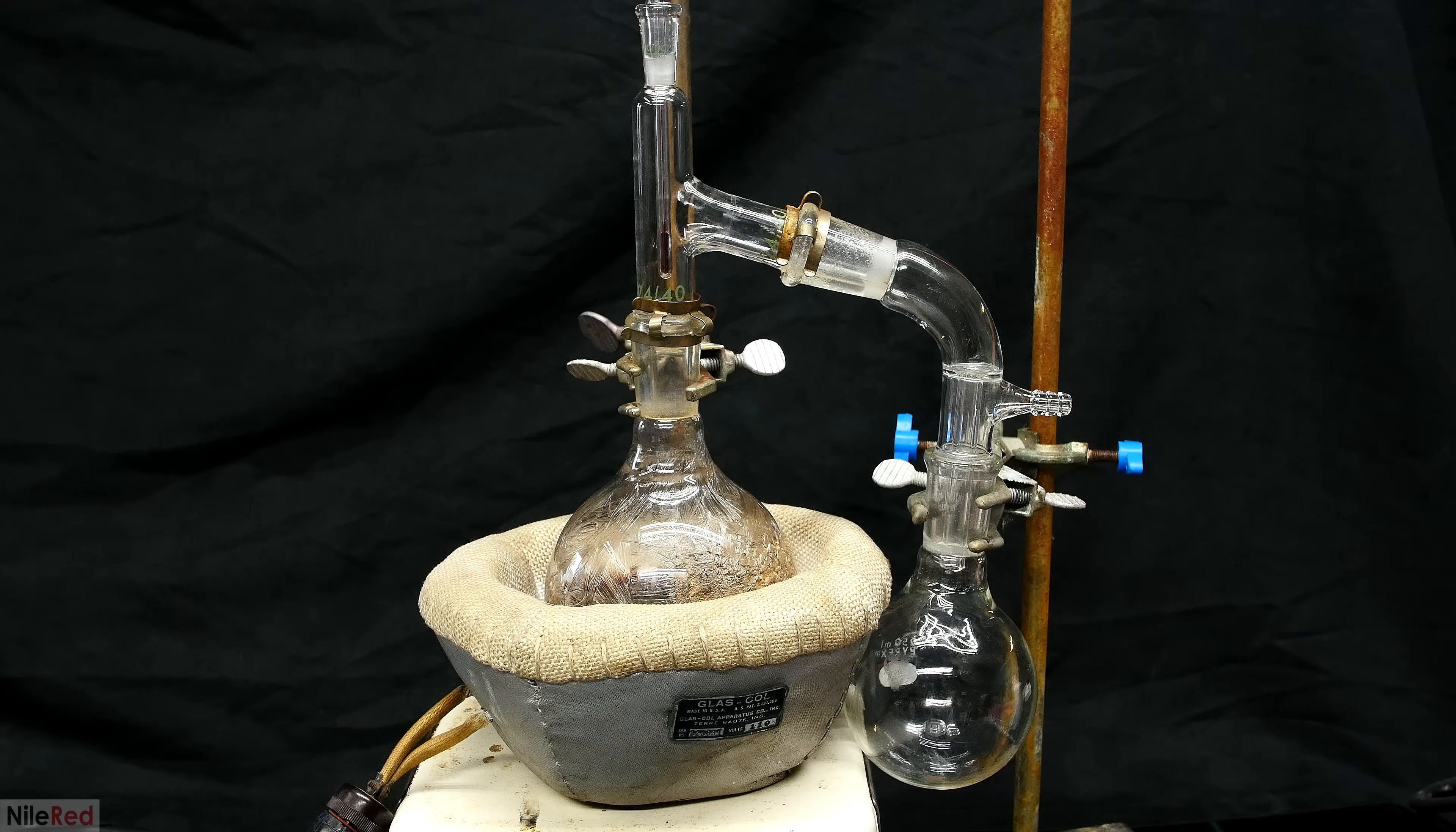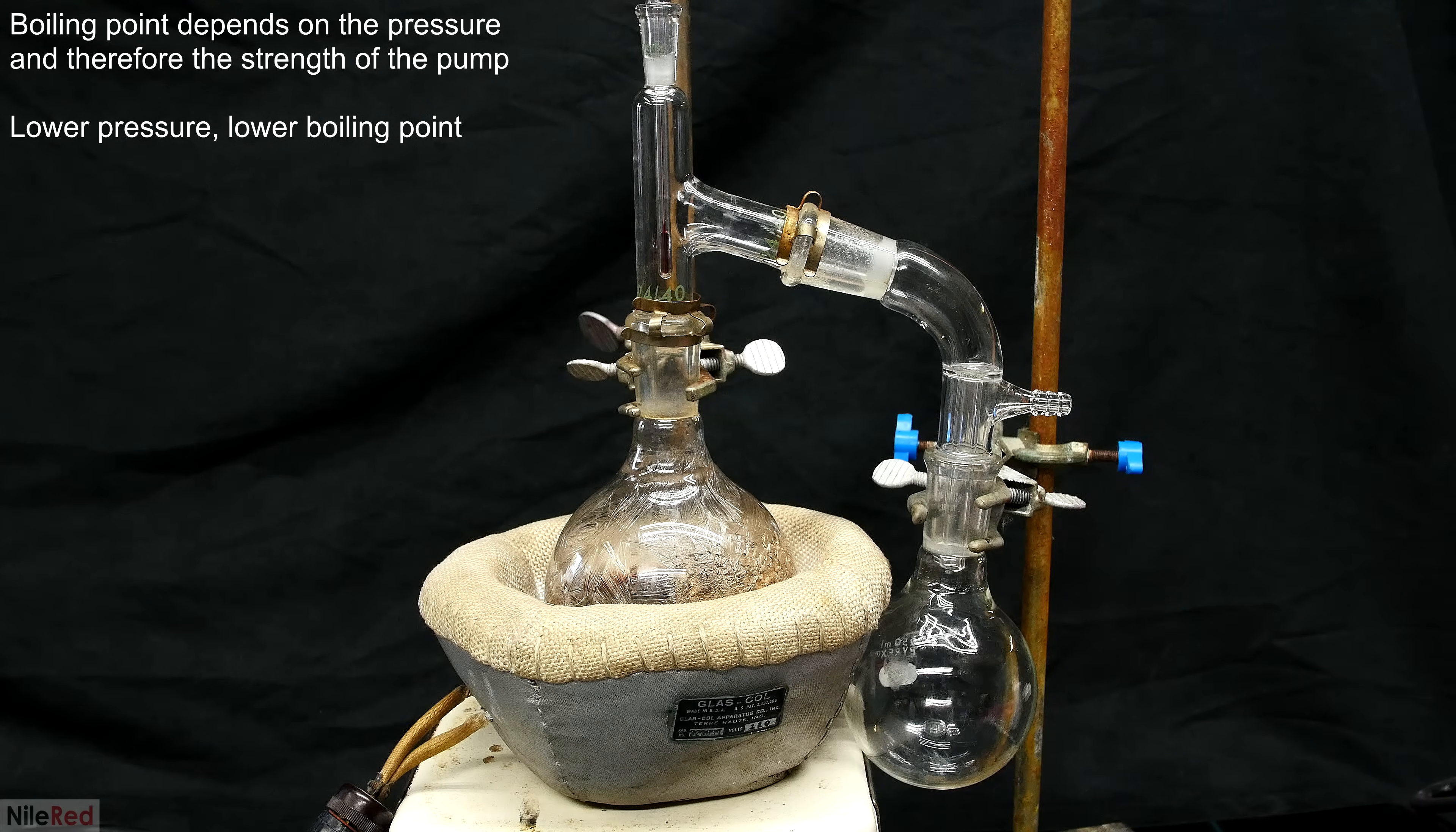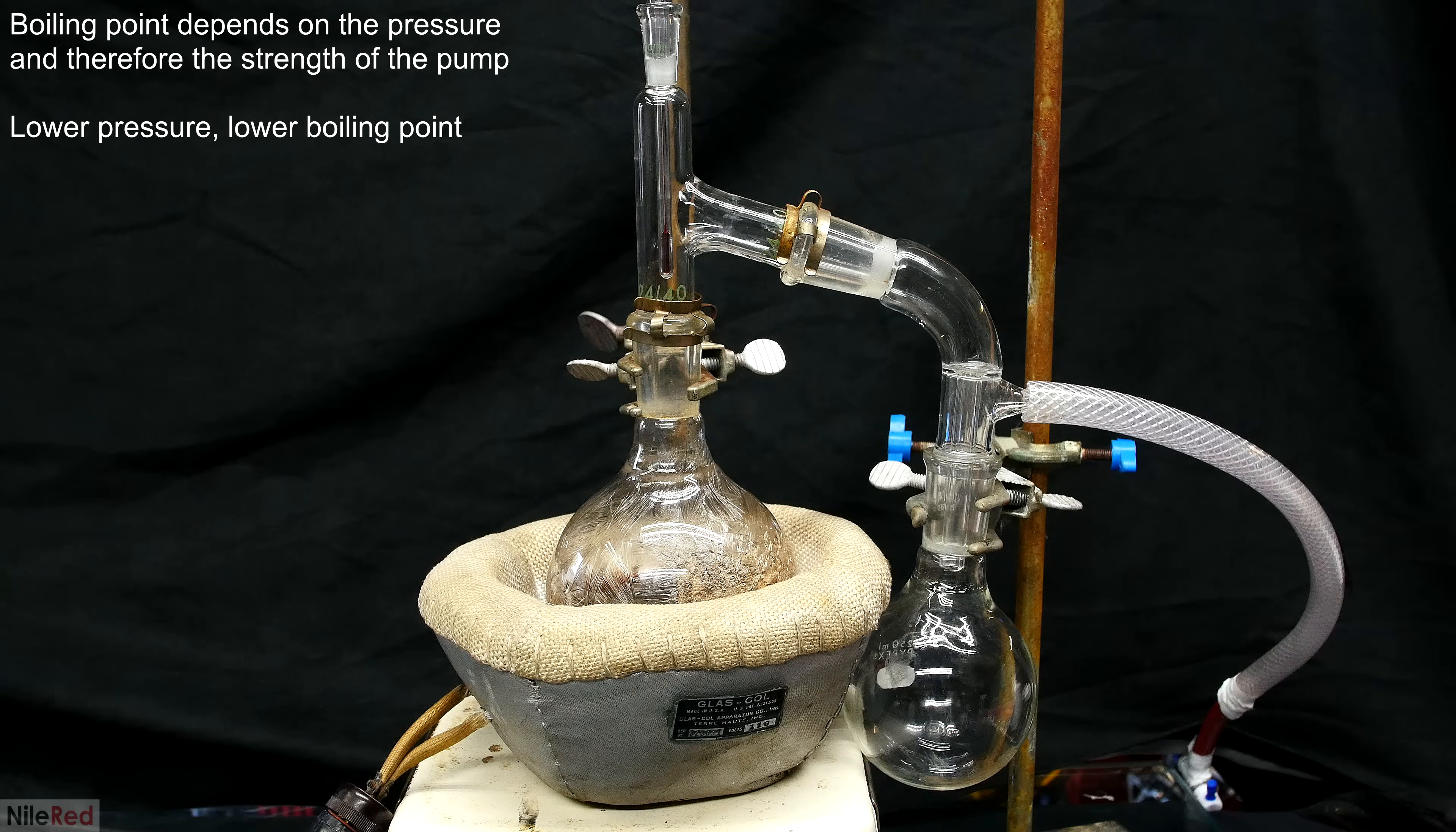To get a better separation and a potentially cleaner product, you could also use a fractional column. We use a vacuum distillation here for two main reasons. The first one being that it greatly reduces the boiling point of the phenol, and it also prevents the phenol from reacting with oxygen.